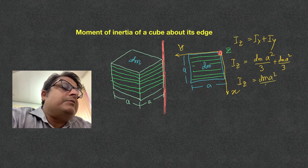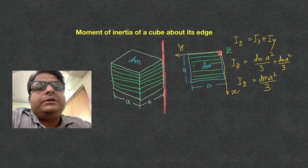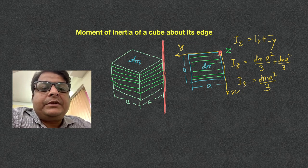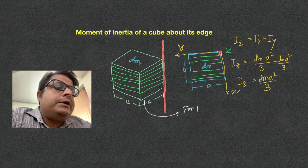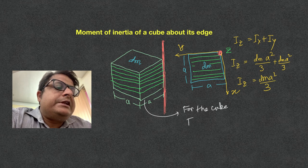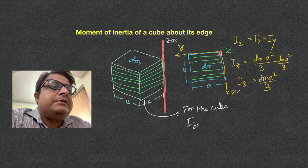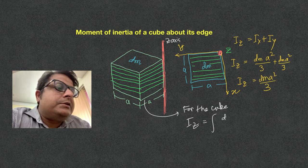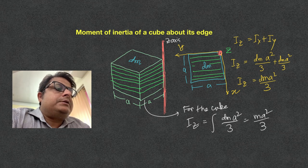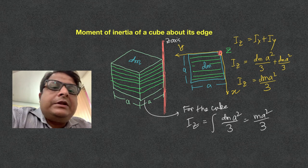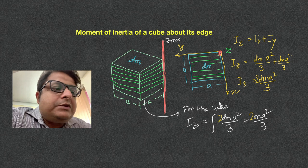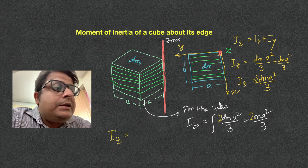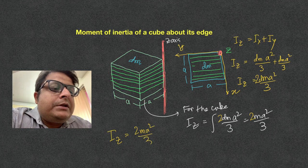For the cube, moment of inertia about the z-axis, I mean this is the z-axis, that means the edge of the cube, is just summation of this dm a square by 3. That means it is m a square by, sorry, there was this 2, therefore 2 dm a square by 3. So the answer will be Iz is 2 m a square by 3.